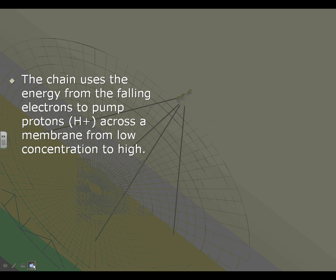The chain uses the energy from the falling electrons - and here's where we're going to get a little chemistry science-y for a minute, and we'll come back to this a lot in the next couple of weeks - to pump protons, hydrogen ions, across a membrane from low concentration to high.